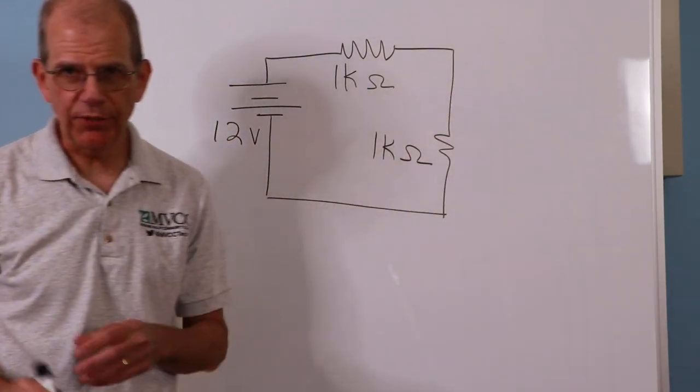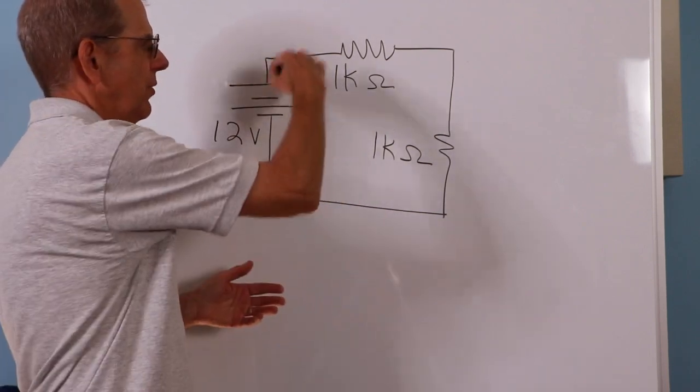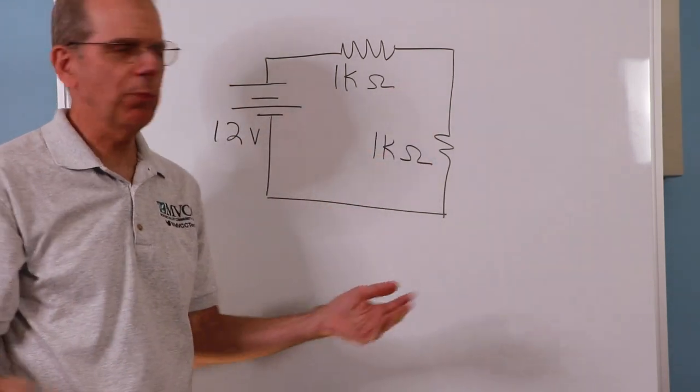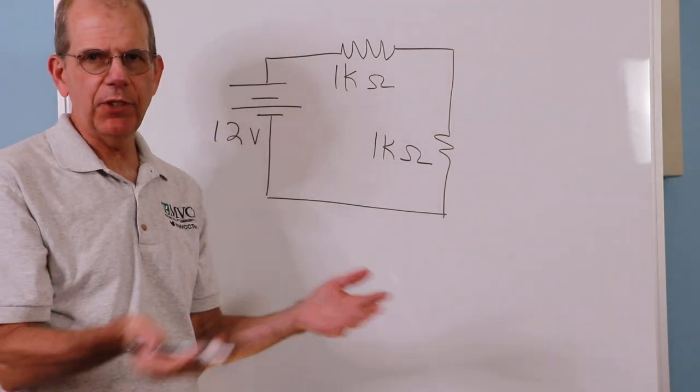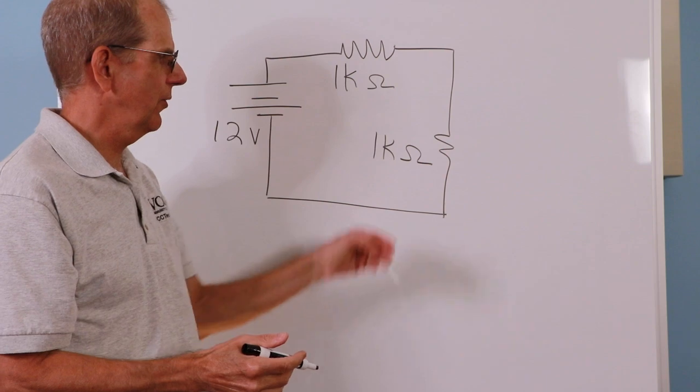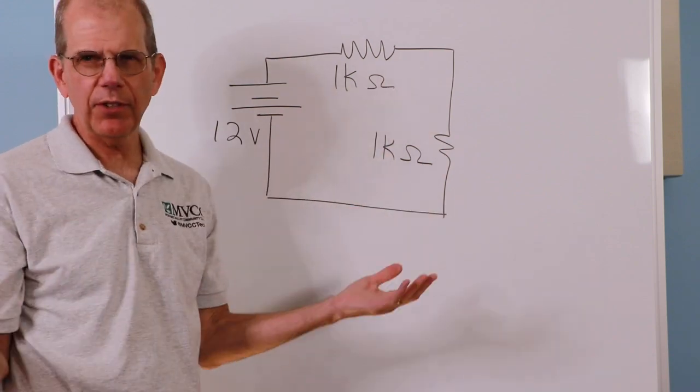Now there's different ways you can solve this circuit. You could sum up the total resistance, 2k ohms, divide into the 12 volts. It'll get you 6 milliamps. Then you can use Ohm's law, 6 milliamps times 1k gets you 6 volts. Same thing across the other one, 6 volts.